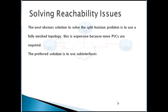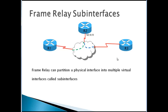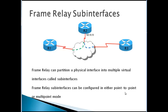The preferred solution is to use sub-interfaces — you create a sub-interface for every other destination. Frame relay sub-interfaces are like virtual interfaces. If router 2 has two sub-interfaces — one for router 1 and one for router 3 — traffic won't go out the same sub-interface it came in on, but will go out the second sub-interface to router 3, which is fine with split horizon.